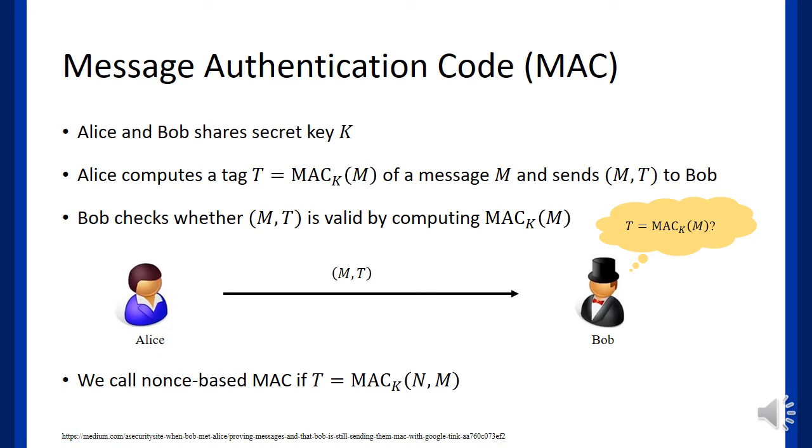Alice and Bob share a secret key K at the beginning of communication. Alice computes the tag of a message M and sends it to Bob. Bob also computes the tag of a given message. Then Bob thinks the given message is valid if the two tags are same.